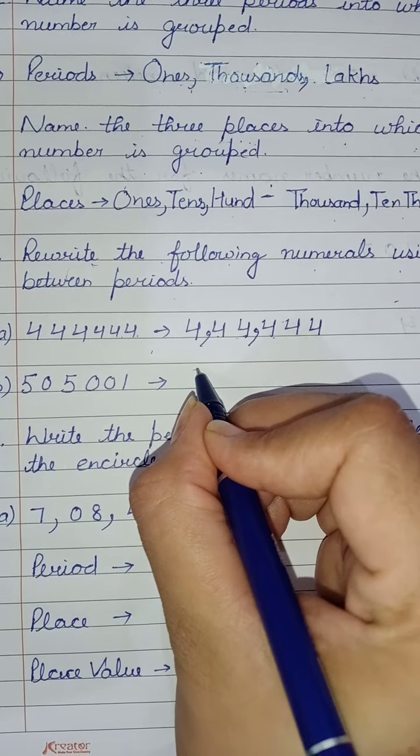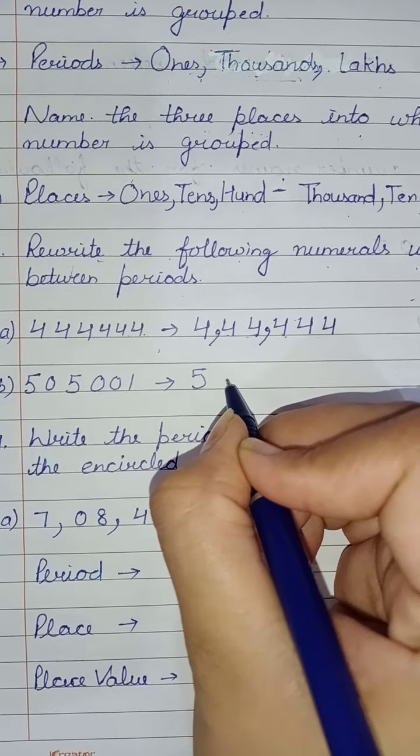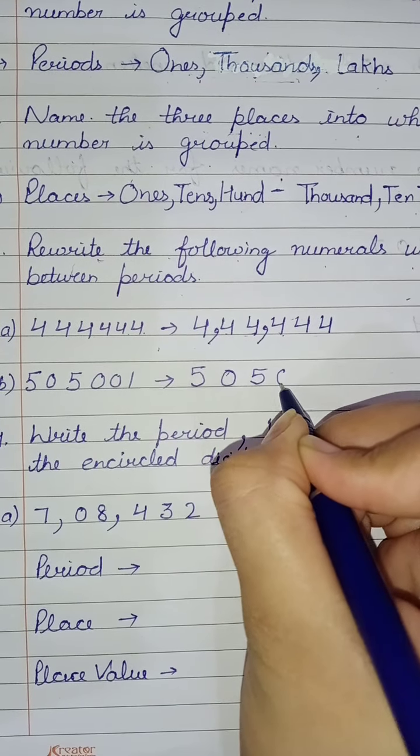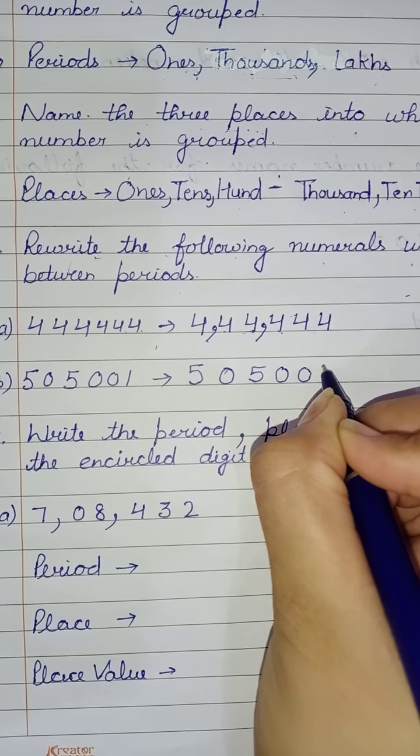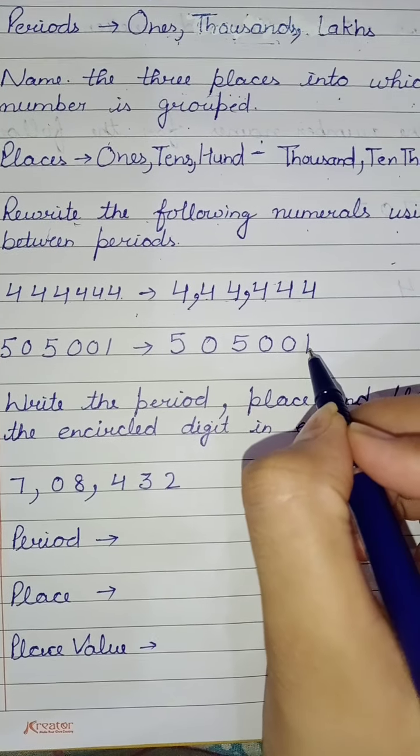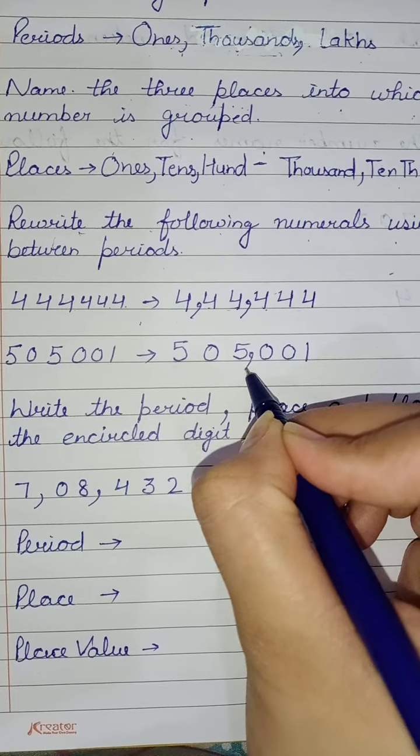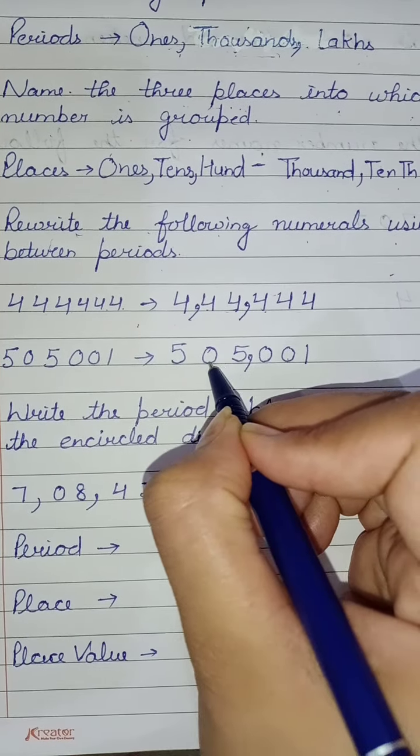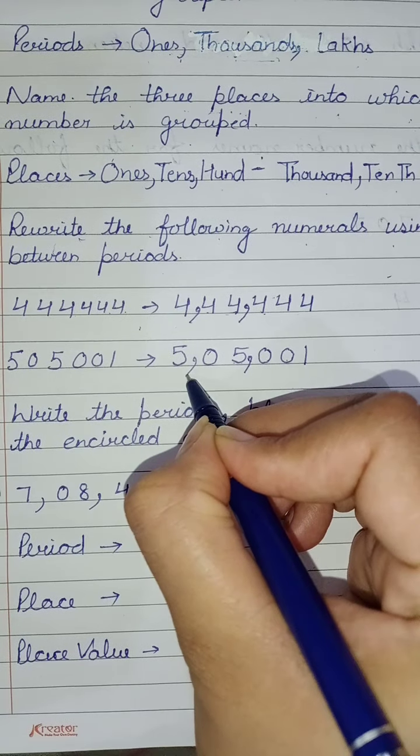Same for the next question. First I will write the numbers. The number is 5, 0, 5, 0, 0, 1. How will you write the numbers?